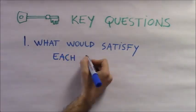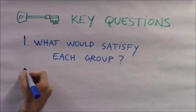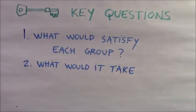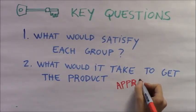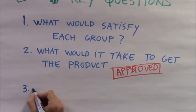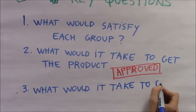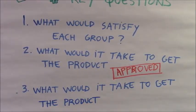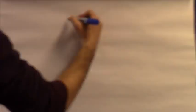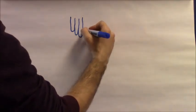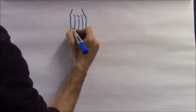So we've got these three key questions. The first is what would satisfy each group? The second is what would it take to get the product approved? And the third is what will it take to get this product available to the masses? So you've got a whole set of interacting stakeholders who need to be satisfied in order to launch a successful product.